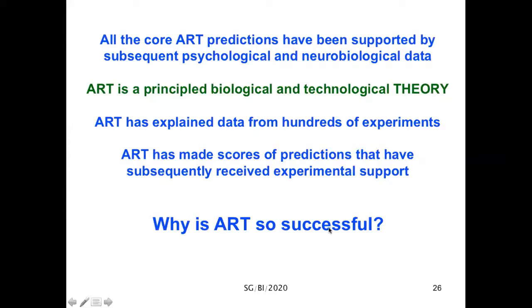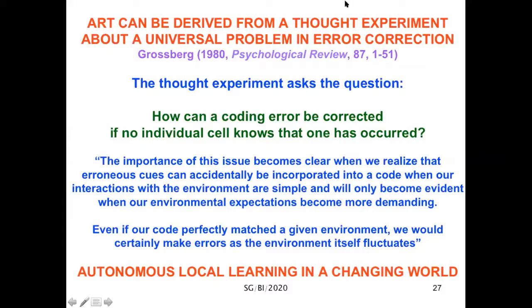Why is ART so successful? One reason can be traced to the fact that ART can be derived from a thought experiment about a universal problem in error correction that I published in 1980 in Psychological Review. The thought experiment asks: how can a coding error be corrected if no individual cell knows that one has occurred? Let me quote from my article: the importance of this issue becomes clear when we realize that erroneous cues can accidentally be incorporated into a code when our interactions with the environment are simple and will only become evident when our environmental expectations become more demanding. Even if our code perfectly matched a given environment, we would certainly make errors as the environment itself fluctuated.